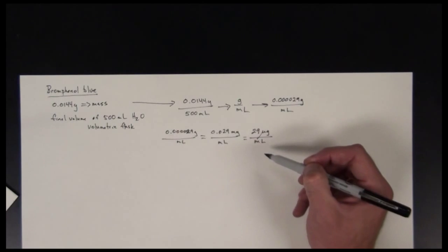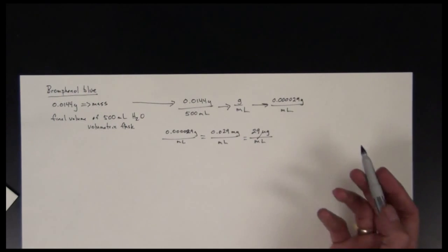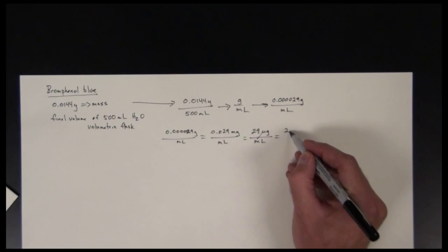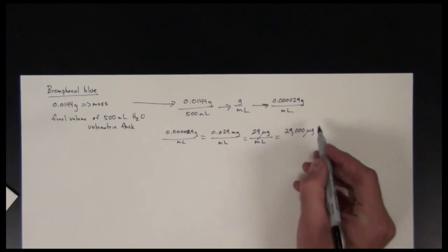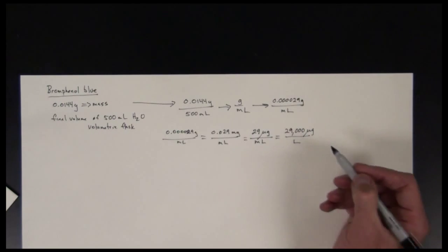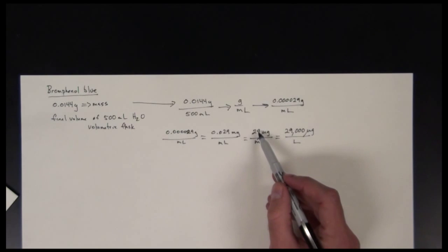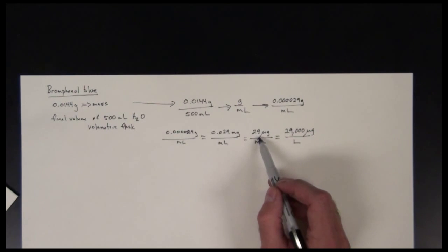This is a more user-friendly way because it's a set unit or integer type of unit, and it's micrograms per milliliter. This is also equivalent to 29,000 micrograms per liter. Since milliliters are smaller than liters, and I know I have 29 of these micrograms per milliliter, and there's 1,000 milliliters in a liter, I multiply this number by 1,000.